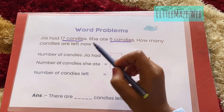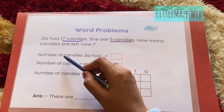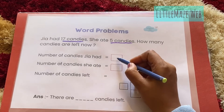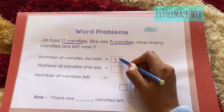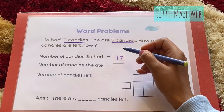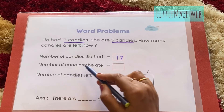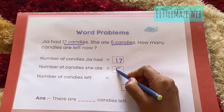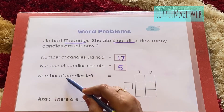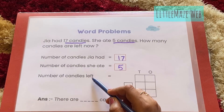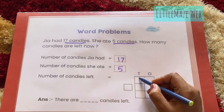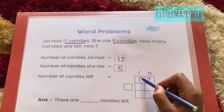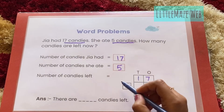Let's look at the statements. Number of candies Jia had is 17, so we'll write 17 inside the box. Then we have number of candies left. Now we'll show the working — Jia had 17 candies, so we'll write 17.